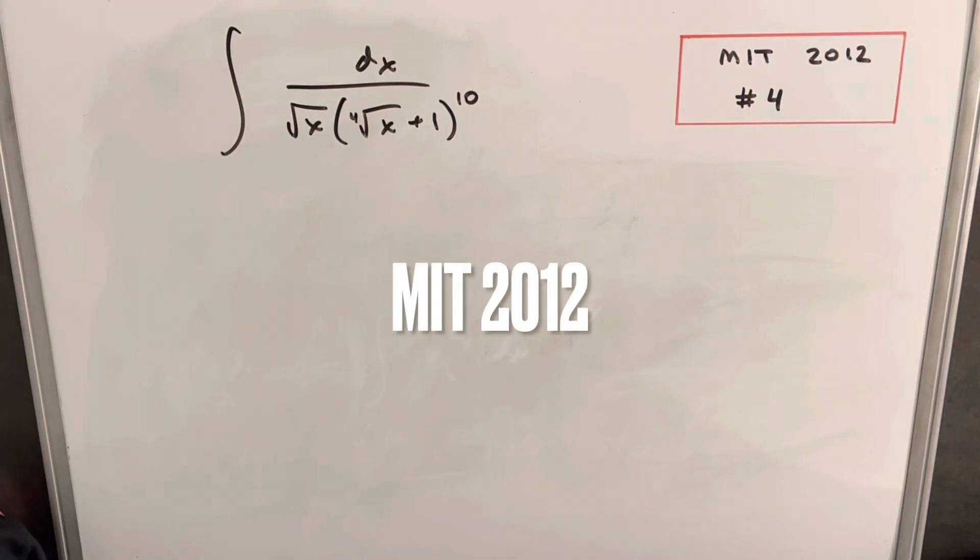Hey, we have here today a pretty tricky looking integral from MIT 2012, problem 4. We have the integral of dx over the square root of x, fourth root of x plus 1 to the tenth power.